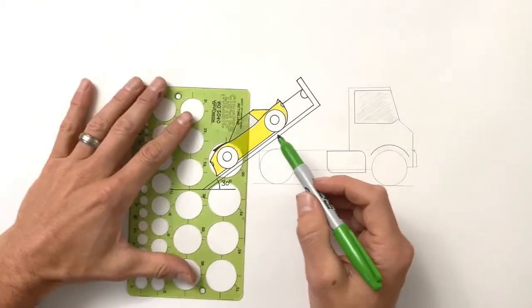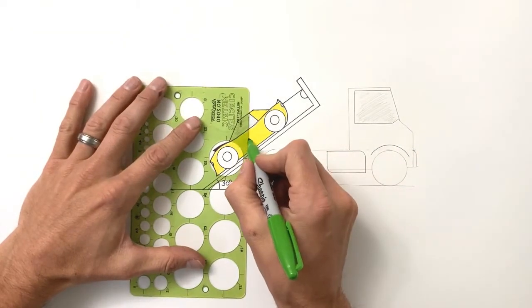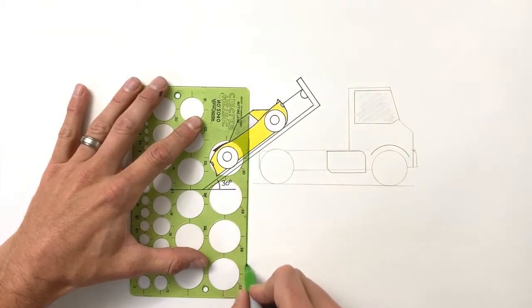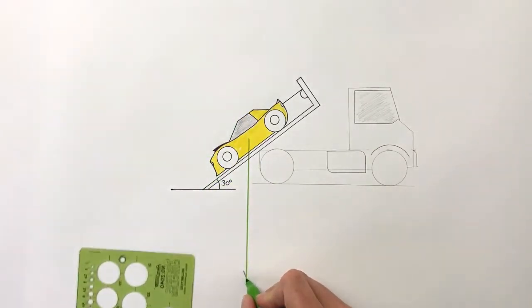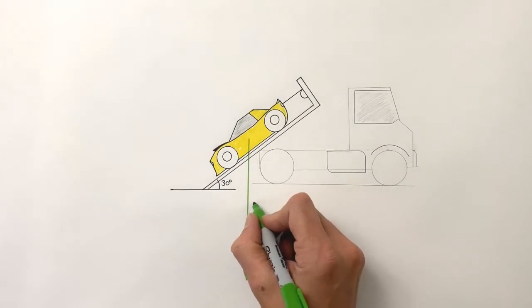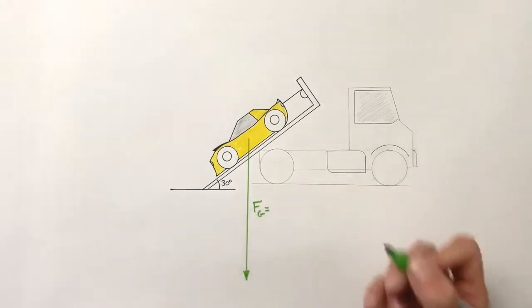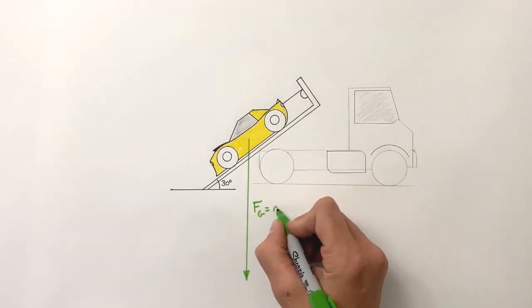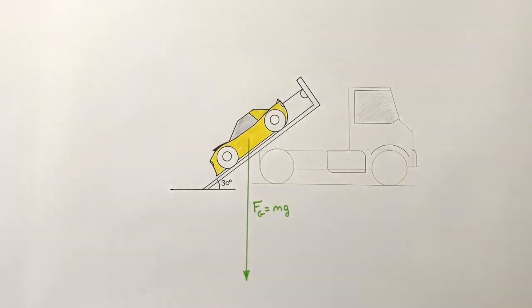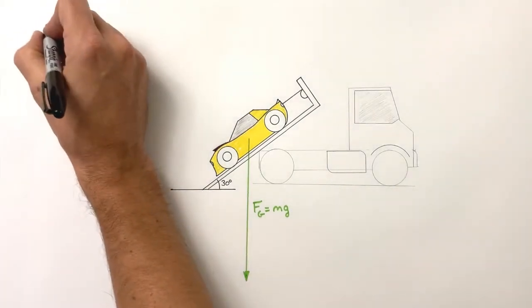The first force we want to take a look at is the weight of the car. The weight of the car is the force by gravity, that can be calculated using the equation mg, mass times the acceleration due to gravity. The mass of this car was 2,000 kilograms.